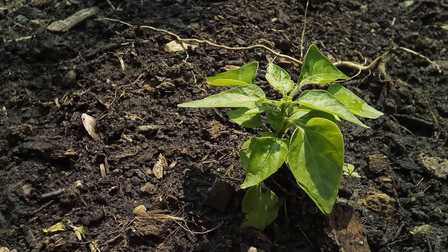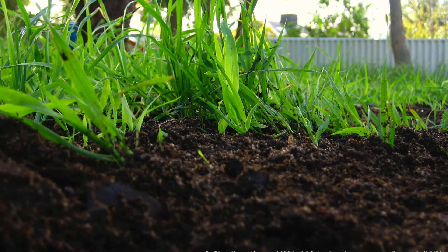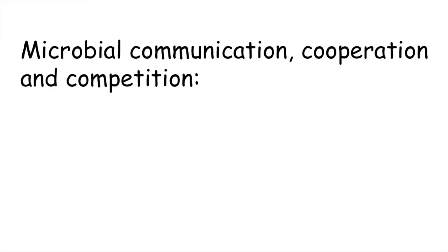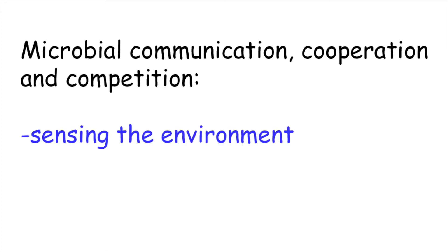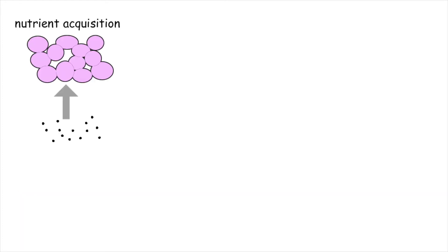In the soil, plants, insects, fungi and bacteria are all jostling for nutrients, with each working to carve out an effective niche to call home. For microbes, communication, cooperation and competition are frequently achieved by the sensing of their environment and by secreting different enzymes and molecules. Nutrient availability is a major determinant of microbial behaviour and can frequently influence cooperation and competition decisions.